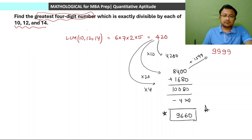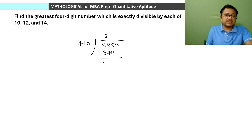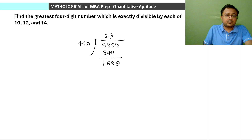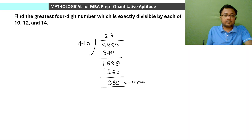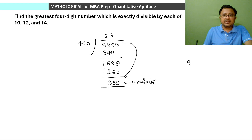So 9,660 is our largest 4-digit number. Alternatively, divide 9,999 by 420: it goes approximately 23 times. 420 × 23 = 9,660, remainder 339. Subtracting the remainder from 9,999 gives 9,999 − 339 = 9,660. Both approaches confirm the answer is 9,660.